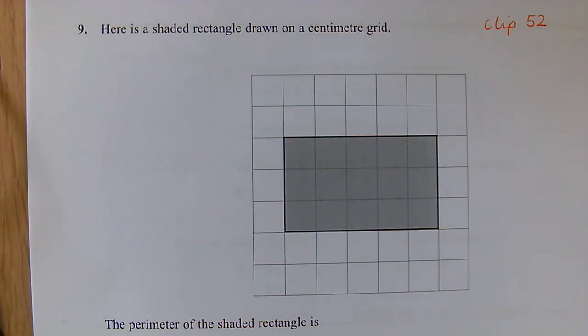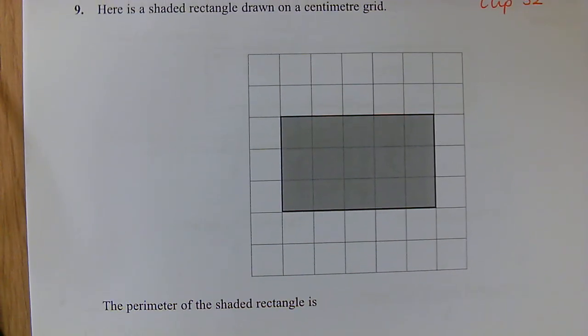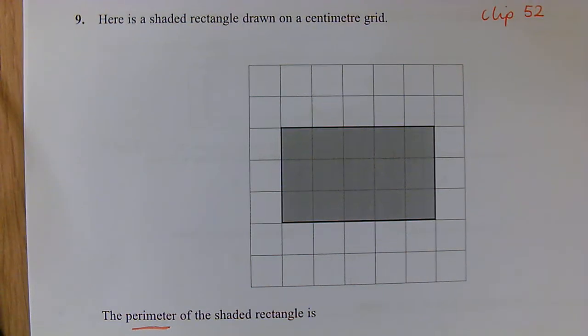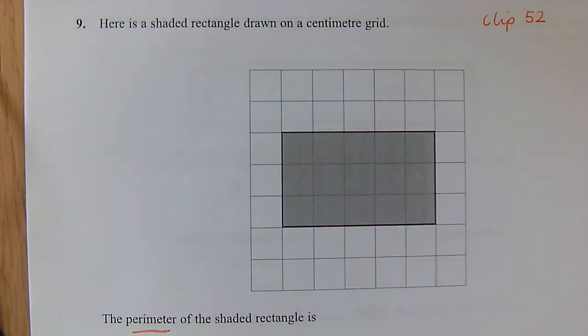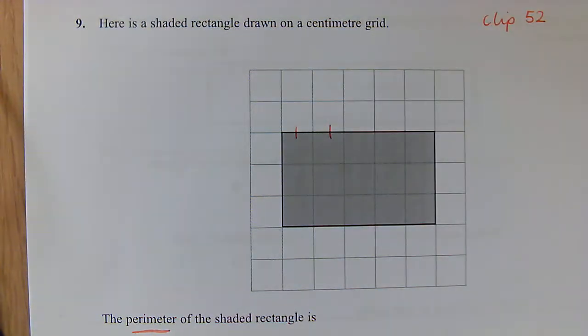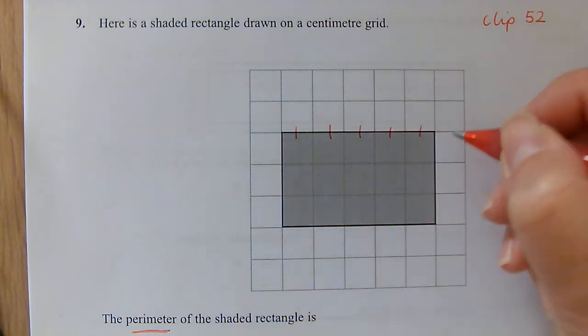Question 9: We've got a rectangle on a centimeter grid. We want to know the perimeter. So remember, the perimeter is the distance around the outside. When you've got something drawn on a centimeter grid, the best thing to do is draw little lines so you know which ones you've counted.